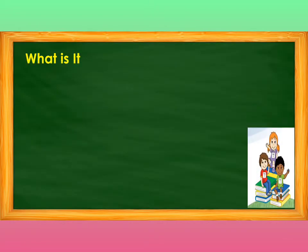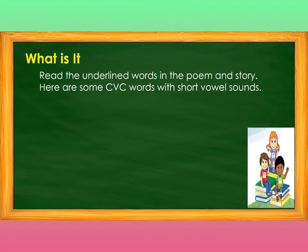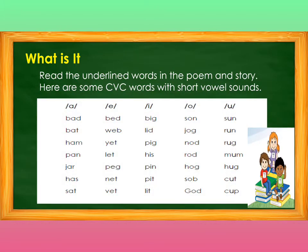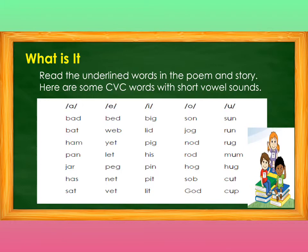What Is It? Read the underlined words in the poem and story. Here are some CVC words with short vowel sounds. In the A sound, we have bat, cat, hem, ton, jar, hat, sat. In the E sound, we have bed, web, yet, let, peg, met, vet.